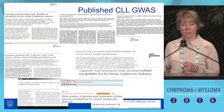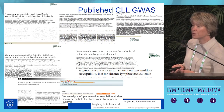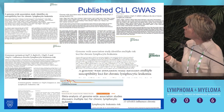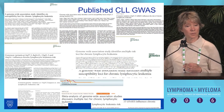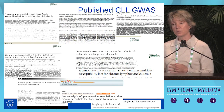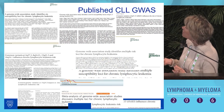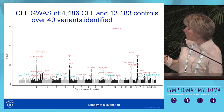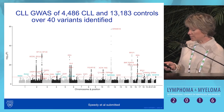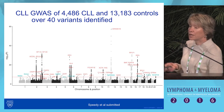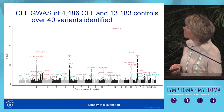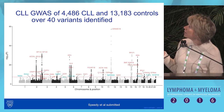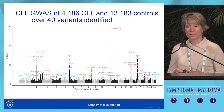For CLL, my colleague Richard Holston was first to publish a GWAS in 2008, with subsequent studies increasing sample size. My colleague Richard and I have a paper under review with the largest CLL GWAS to date — 4,400 CLL cases and 13,000 controls — identifying nine more inherited variants associated with CLL risk, bringing the total to over 40 variants identified.